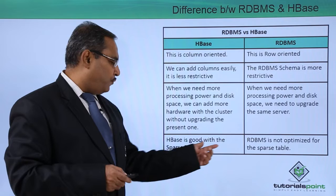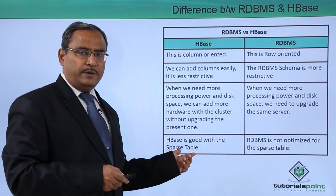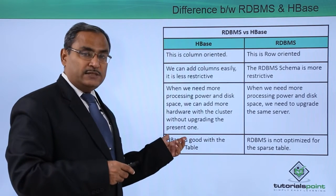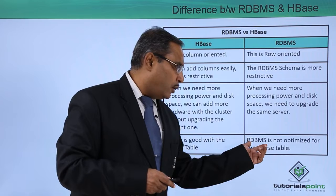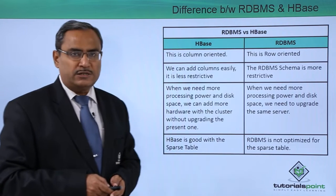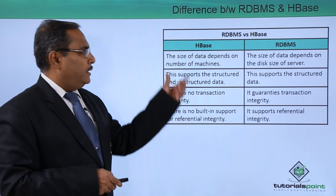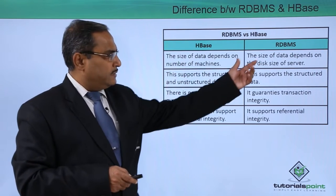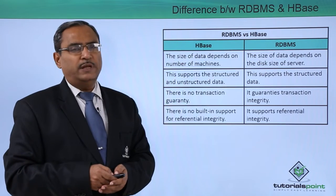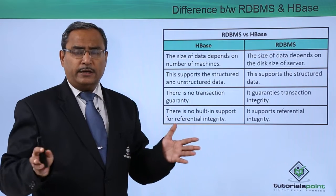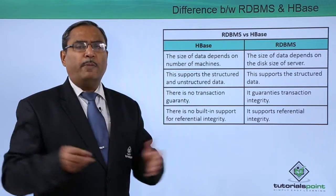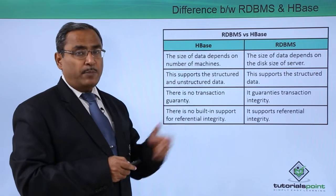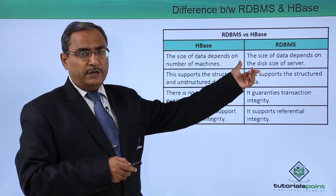HBase is good for sparse tables — that means whenever we are having multiple null values, HBase is very much efficient for those sparse tables. But RDBMS is not optimized for sparse tables. The size of data in HBase depends on number of machines, whereas in RDBMS it depends on the disk size of the server. In HBase, data will get replicated and distributed onto multiple different nodes, so the size of the data depends upon the number of machines, not on the disk space of the server.